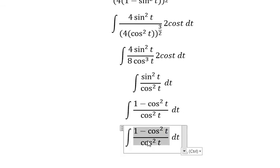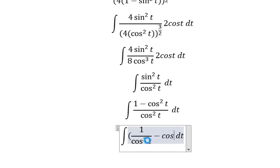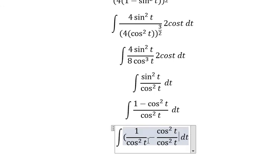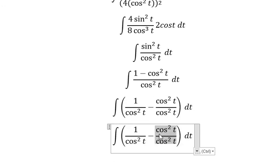This gives us two separate fractions. The first fraction simplifies to 1 over cosine squared t.